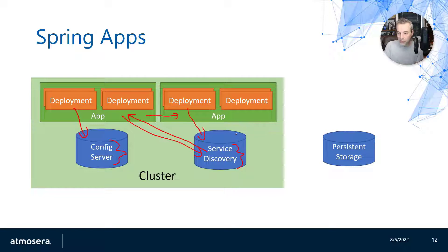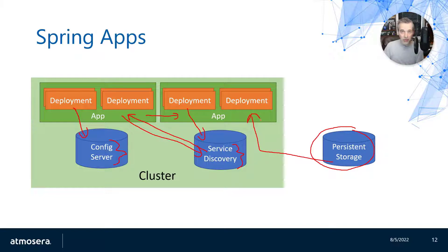What this allows us to do is configure an external data store which is a file service. That will allow us to take whatever is in this persistent storage and mount it inside of the application as part of the file system, so that the application can read and write data from that file system level call. It's going to be hosted and stored outside of the cluster on an Azure storage account so that you can read that data in and write that data out.